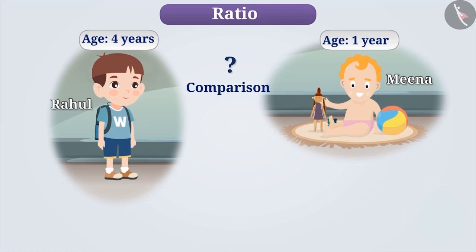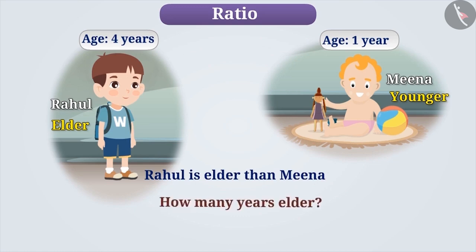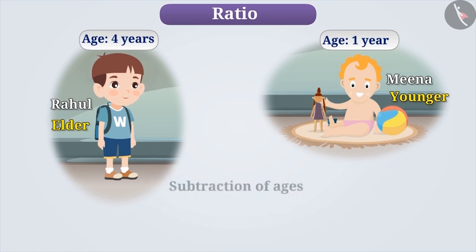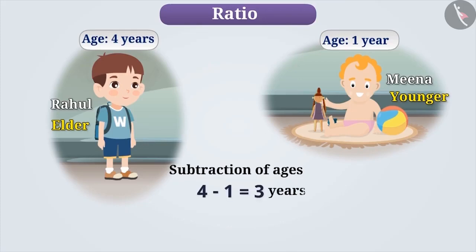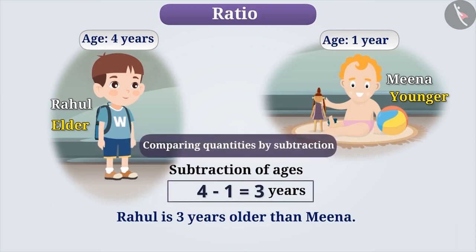In order to compare their ages, we can say that Rahul is elder to Meena. This kind of statement tells us about the quantity being greater or smaller, but it cannot give us a clear idea about how many years Rahul is elder to Meena. If we subtract their ages, we get 3. This shows that the difference between their ages is 3 years. Therefore, we can say that Rahul is 3 years older than Meena. This method of comparison is called comparing quantities by subtraction.